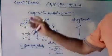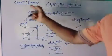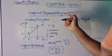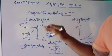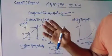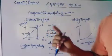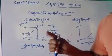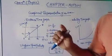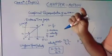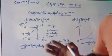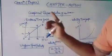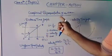Hello students, today we will discuss chapter Motion, Class 9 Physics. The topic is graphical representation of motion. In the previous topic we discussed acceleration, uniform acceleration, positive acceleration, and negative acceleration. I hope you have noted all of that down in your notebooks. Today we will discuss graphical representation of motion.